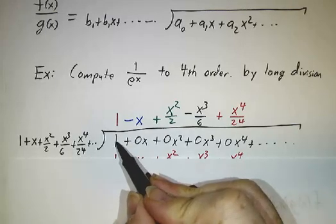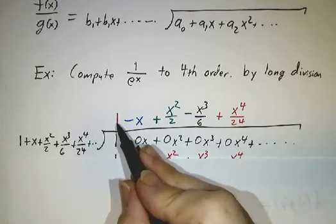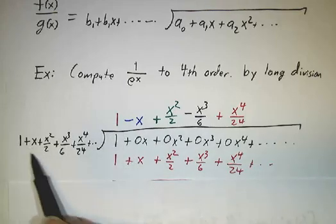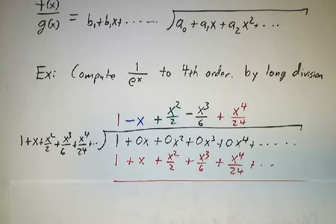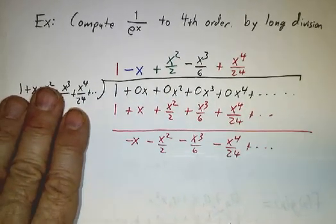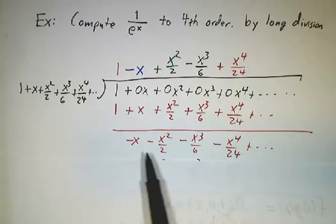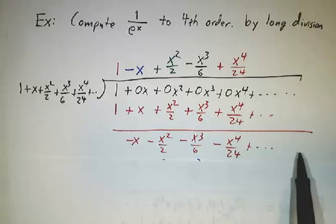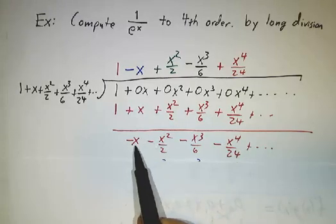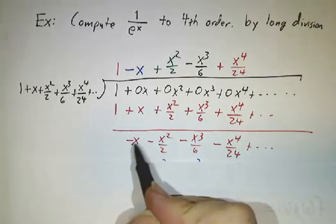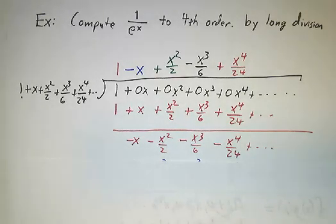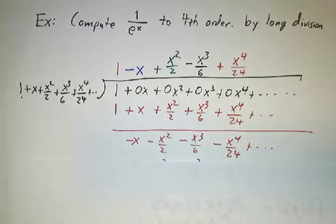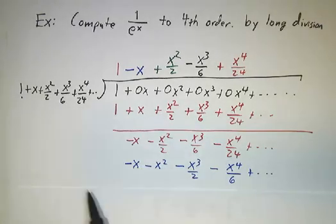You look at the biggest piece. The 1 divided by the 1 gives you 1. Then you have to subtract off 1 times all of this. When you subtract off that, you wind up with a remainder of minus x, minus x squared over 2, minus x cubed over 6, minus x to the fourth over 24, and so on. You divide the remainder by all this. The leading term here is minus x, the leading term here is 1. The ratio is minus x.